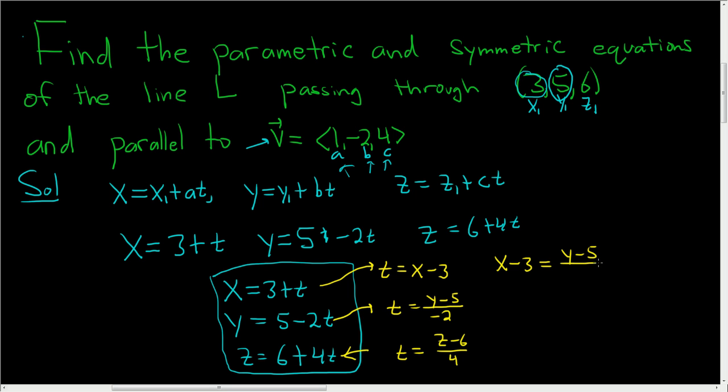So x minus 3 equals y minus 5 over negative 2 equals z minus 6 over 4. So those are the symmetric equations, and these here are the parametric equations. I hope that made sense.